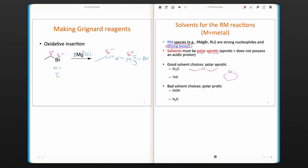Bad solvent choices are polar protic solvents, such as ethanol. Notice that ethanol has a hydrogen on a heteroatom. So if we try to use something like ethyl magnesium bromide in a reaction and had ethanol as a solvent, all that's going to happen is an acid-base reaction between the Grignard reagent and the solvent.